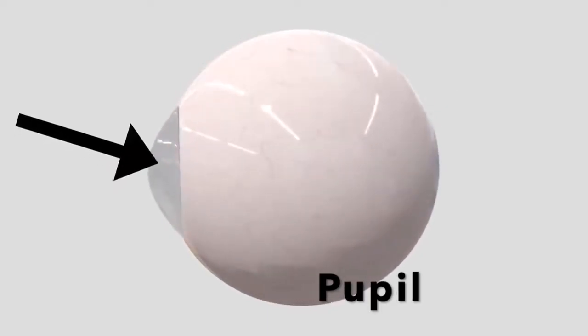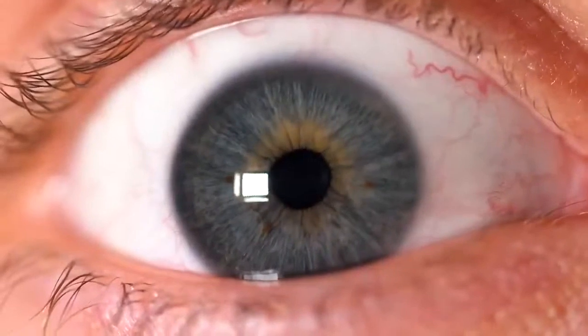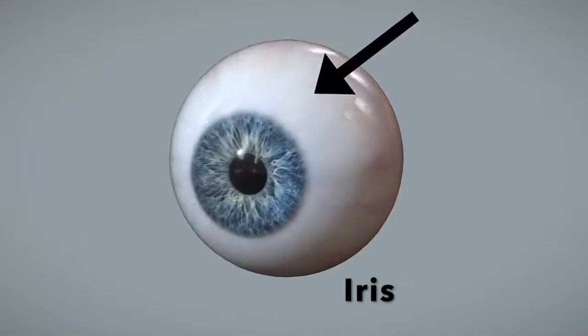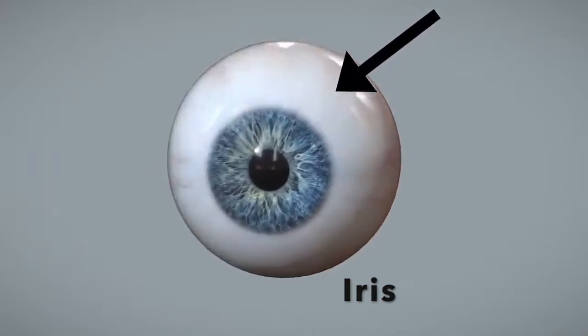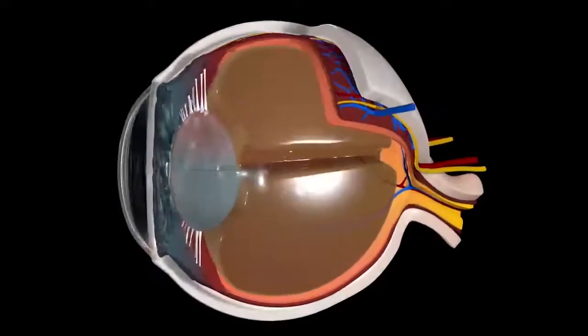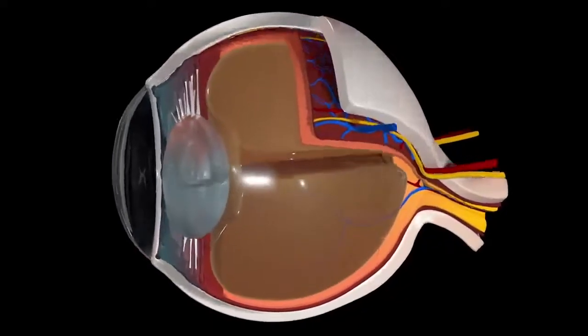The iris surrounds the pupil. It controls how much light enters the eye by changing the size of the pupil. The cornea, a clear window, covers the iris and the pupil.